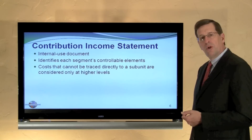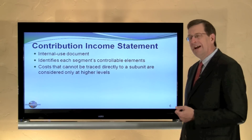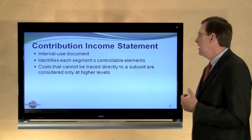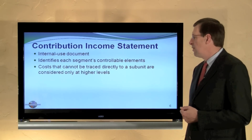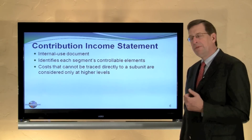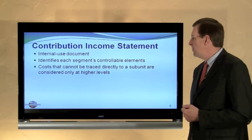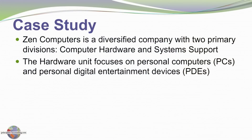It's an internal use only document. It identifies each segment's controllable cost elements, and costs that cannot be traced directly to a subunit are considered only at higher levels. Let's look at an example to show how this can operate.